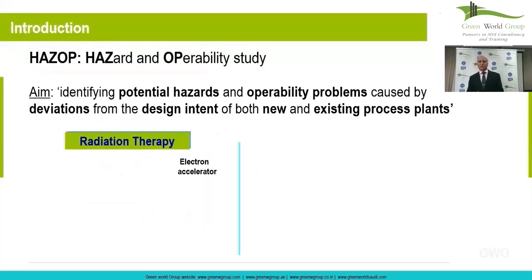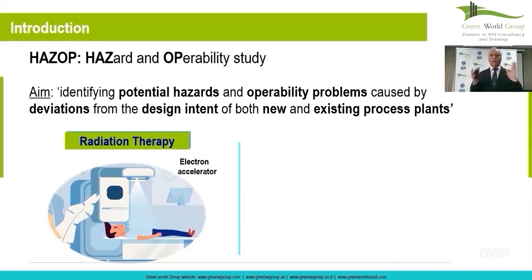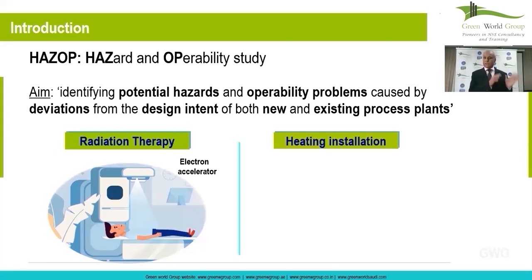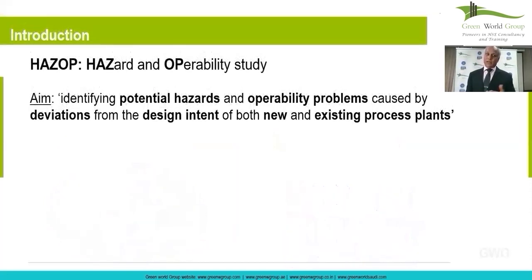Let's look at some very simple process examples. One of the processes is radiation therapy, which is used to illustrate why we develop processes — they are all useful to human beings in one way or another. They can be in petrochemical industries, oil and gas, engineering, or healthcare industries. Radiotherapy is one process used to treat people from certain diseases, and for that there are some parameters. Let's take another example: a heating installation, which can be a process heater in industry or a simple heater used in winter at home.